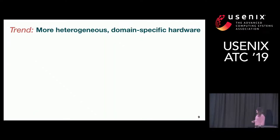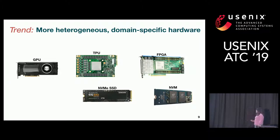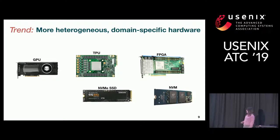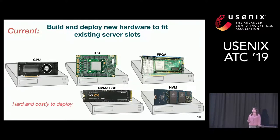What about hardware? Data centers are becoming more and more heterogeneous and domain-specific with things like GPU, TPU, FPGA, and NVM. This is good news — they all want to use these fancy hardware — but the first thing they need to do is find server slots to put these devices in. If they don't have slots, they need to buy new servers and retire old ones. This is a costly process, and because of that, it's hard to incorporate many new hardware ideas.